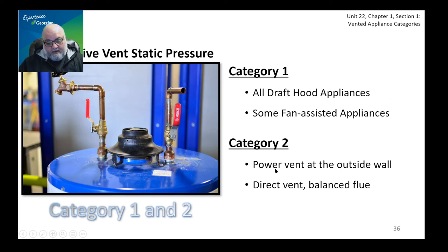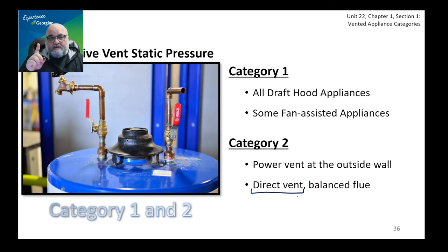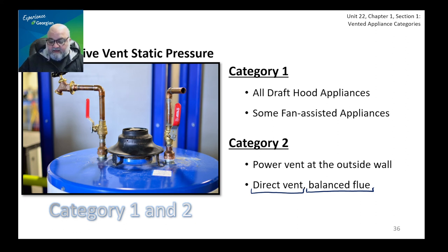Category two is a power vent at the outside wall — interesting because the power vent or venter motor is not an integral part of the appliance itself. It is an add-on component installed at the outside wall. There is also direct vent, where all combustion air comes from outside and all combustion products go outside without a venter motor, using a balanced flue. It's an engineering marvel, but that's why you don't see many category two appliances — they are difficult to design. There are a few commercial/industrial boiler types that are category two.